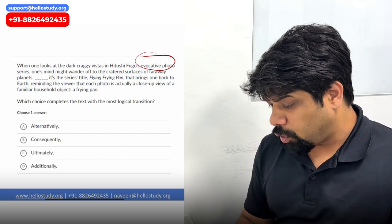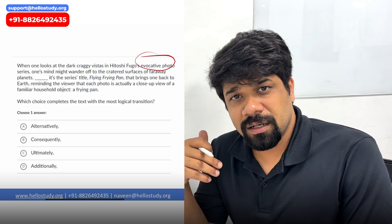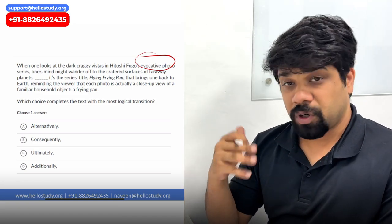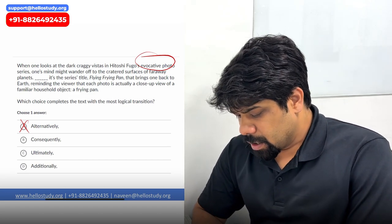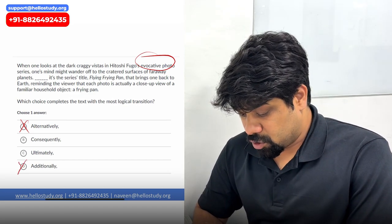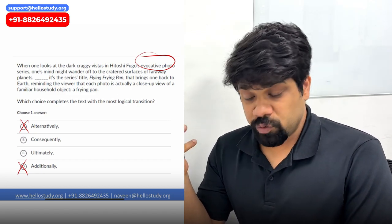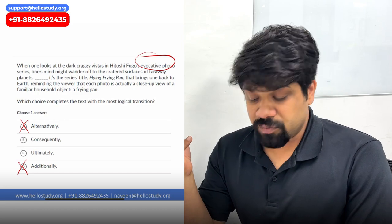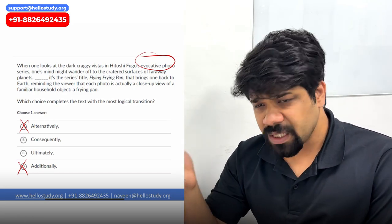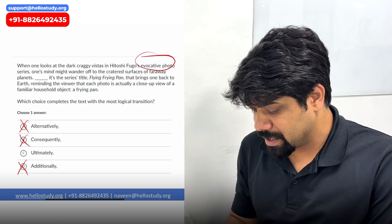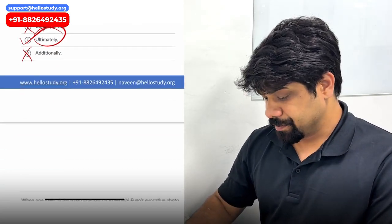Among the answer choices: 'alternatively' is used when giving an alternate explanation or possibility — that's not what's happening here. 'Additionally' is used when giving additional reasons — also eliminated. 'Consequently' is used when giving a conclusion — there's no conclusion here, so B is gone. We're left with C, 'ultimately,' which should be the right answer.